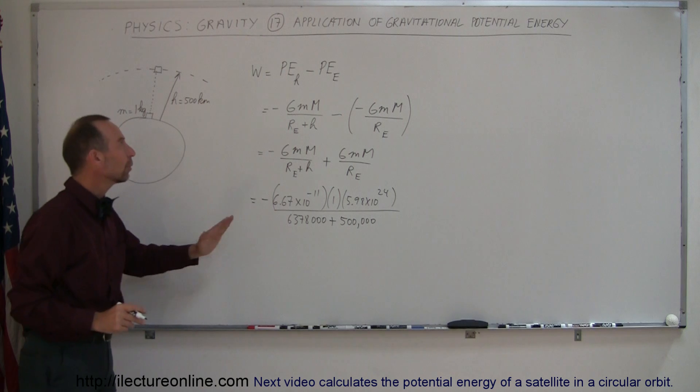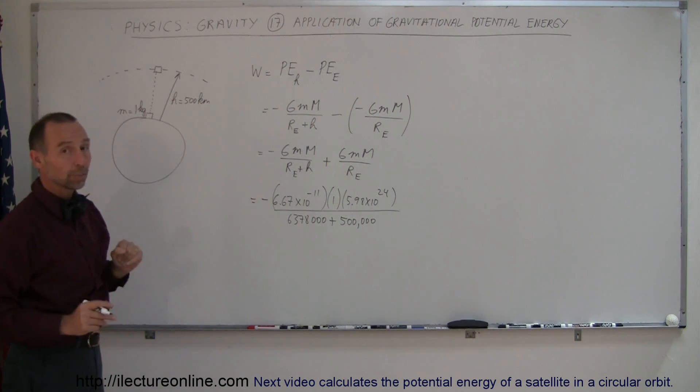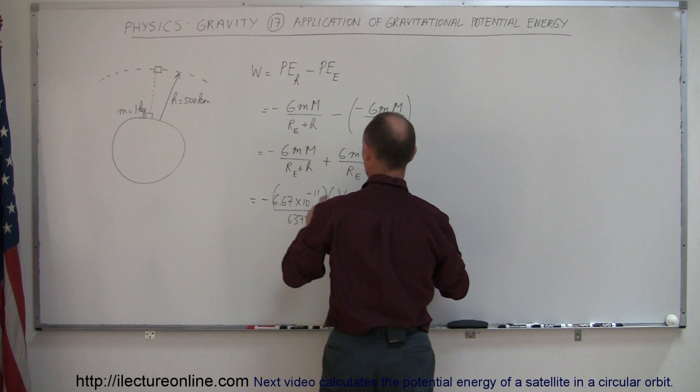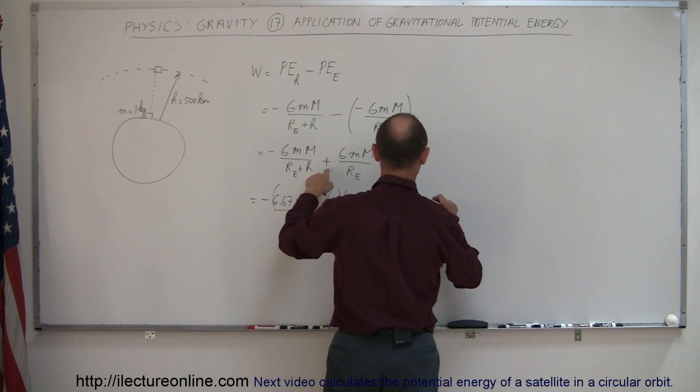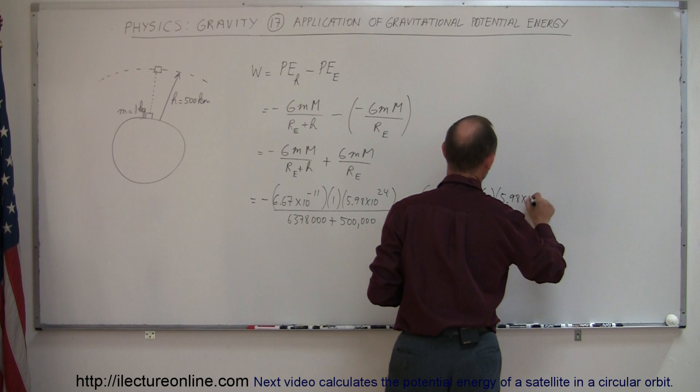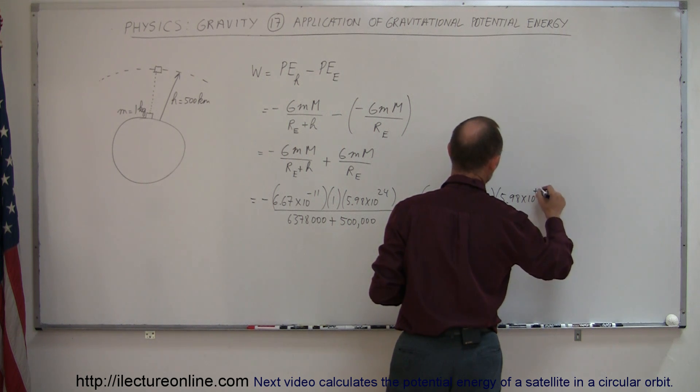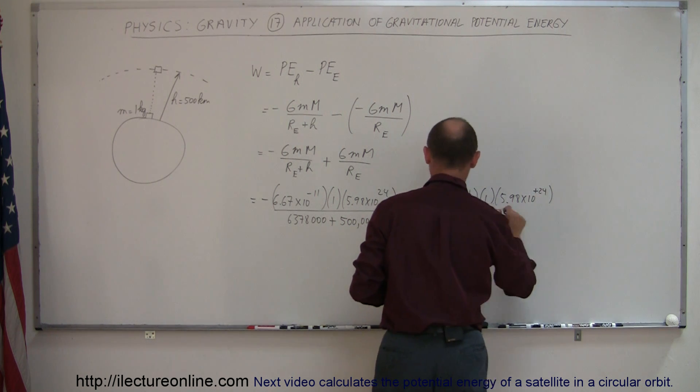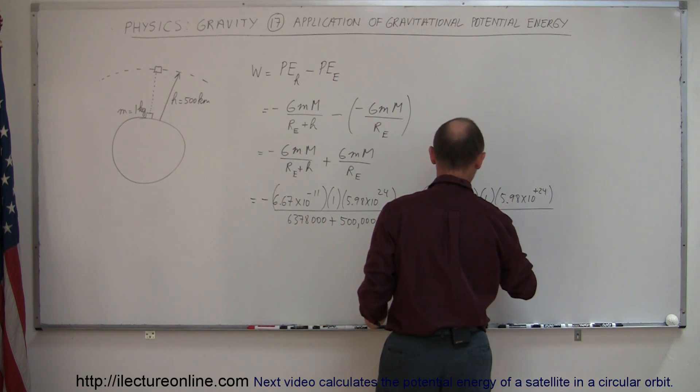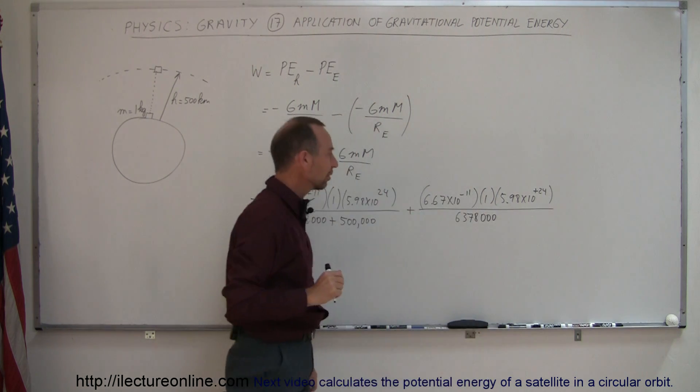Okay, so that's the energy that it would have when it is in orbit. We subtract from that the potential energy it has on the surface of the Earth, which actually we need to add that now. So it would be 6.67 times 10 to the minus 11 times 1 times 5.98 times 10 to the plus 24, all divided by the radius of the Earth.